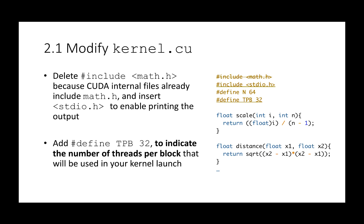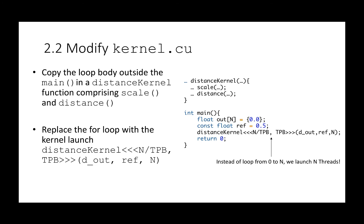As a second step, we start modifying kernel.cu. We can delete #include math.h, because CUDA internal files already include math.h. We insert stdio.h to enable printing the output. We also want to set the number of threads per block to 32 using #define tpb 32. A more fundamental modification is the elimination of the for loop in the C serial code. Instead of performing the scale and distance operation serially using the loop, we will calculate this operation in parallel using n threads. We copy the loop body outside the main into a distance kernel function, comprising scale and distance functions, and replace the for loops with a kernel launch using execution configuration (n/tpb, tpb).